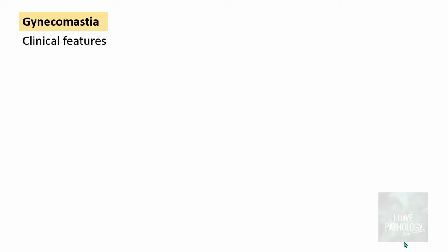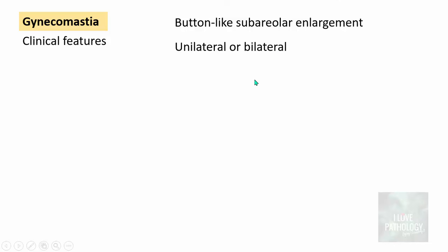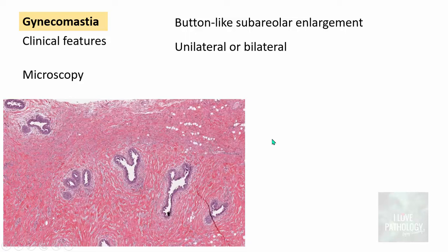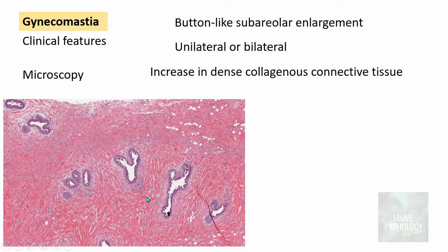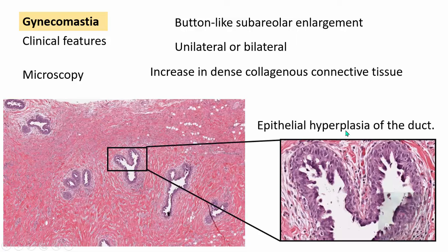Clinically, patients with gynecomastia present with button-like subareolar enlargement, which can be unilateral or bilateral. On microscopy, there is dense collagenous connective tissue surrounding the ducts, and epithelial hyperplasia of the ducts is seen — where normally the duct is lined by bilayered epithelium, you can clearly see an increase in the number of cell layers. That is the histological picture of gynecomastia: ductal epithelial hyperplasia surrounded by collagenous stroma.